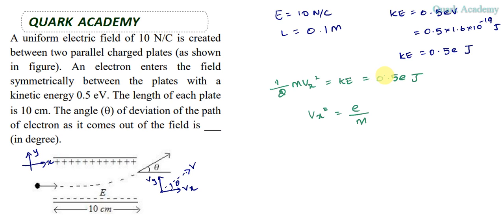This M, which is mass of electron, comes downside, so we get VX squared equals e by M. Let it be like this.